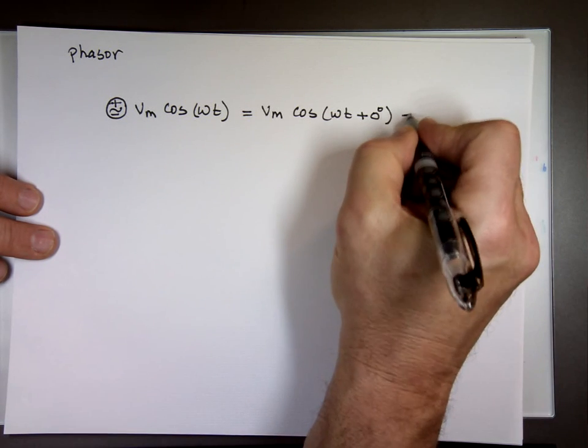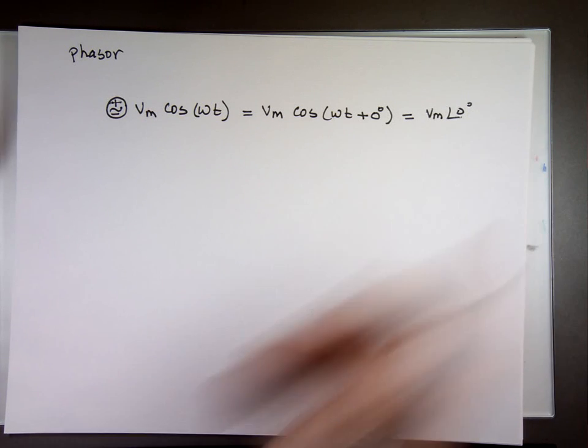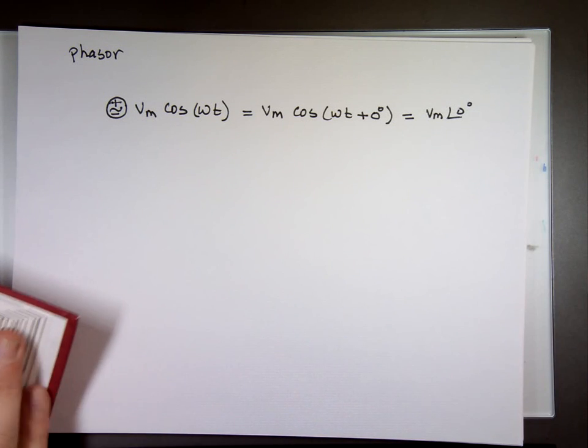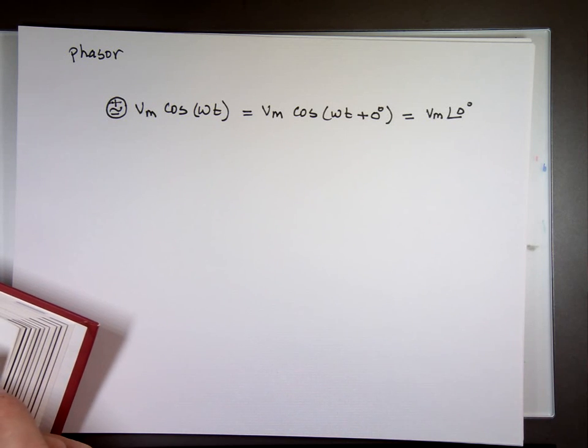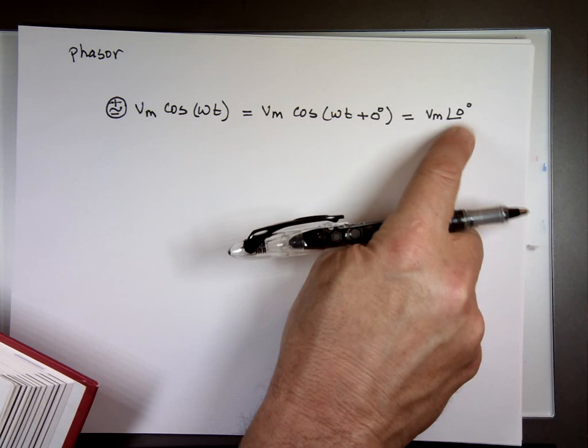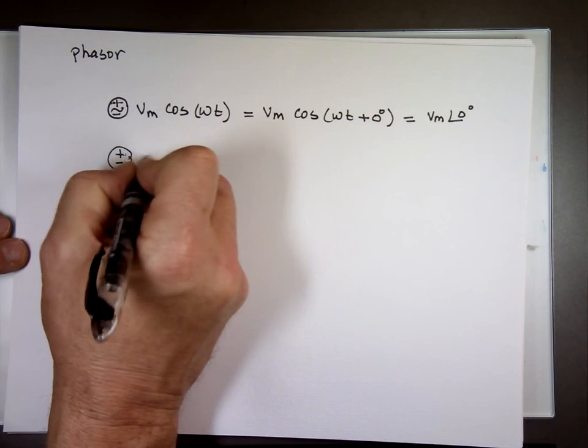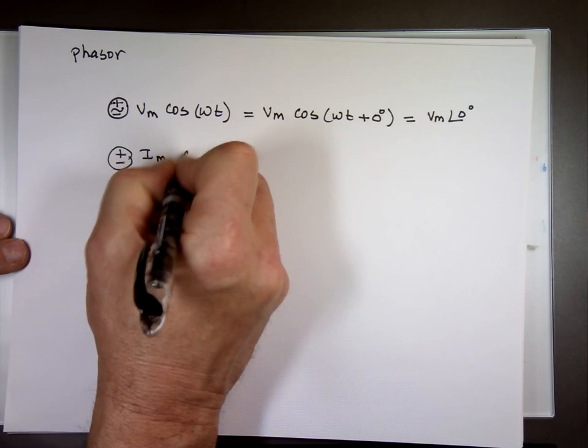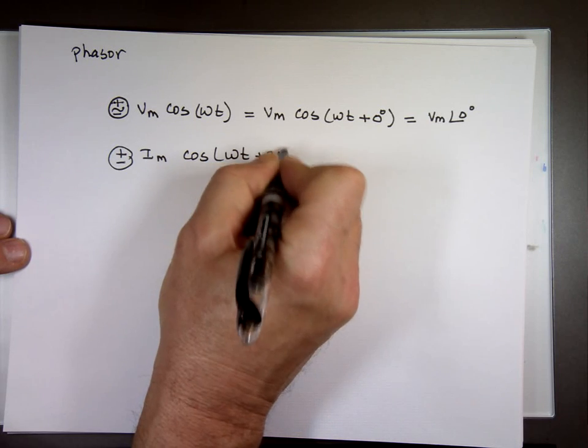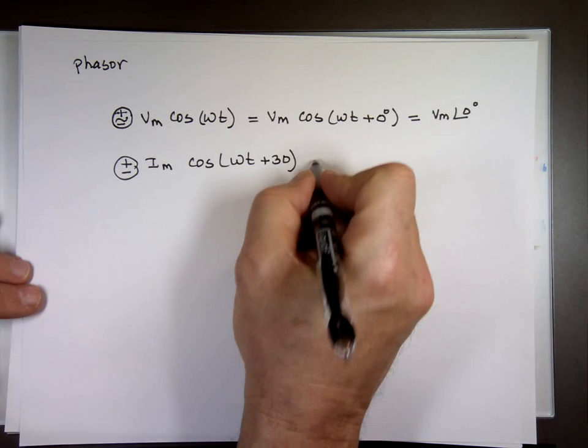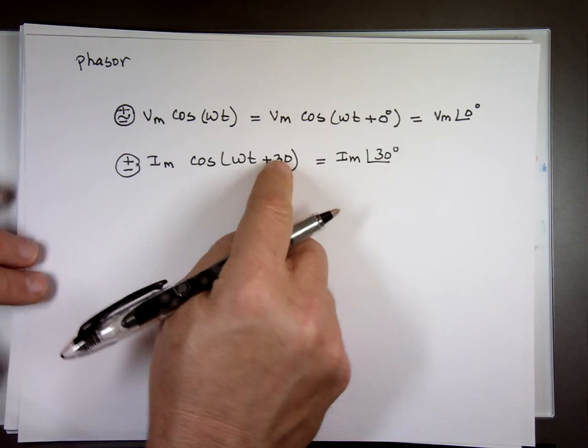So in phasor, we take the source and we write that Vm angle zero. I was pointing zero to the zero power. No, that's zero angle zero, not zero to the zero. If your source, for example, is this one, let's say you have a current source like the previous example, and it was cos(ωt+30°). Then in phasor, we write that Im angle 30 degrees. So we just put the phase shift, the angle.